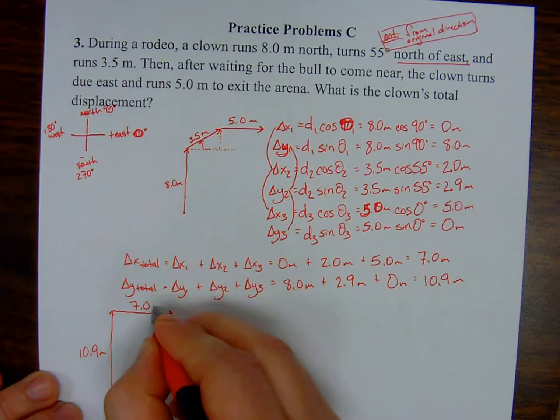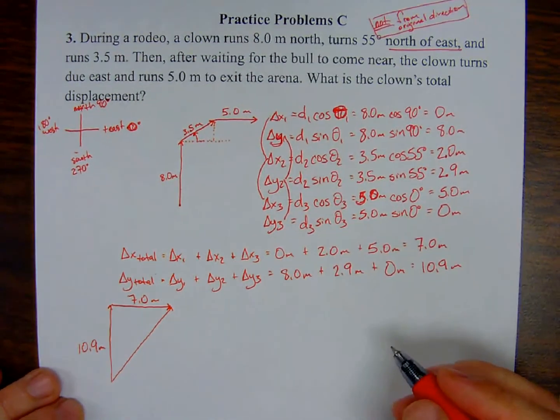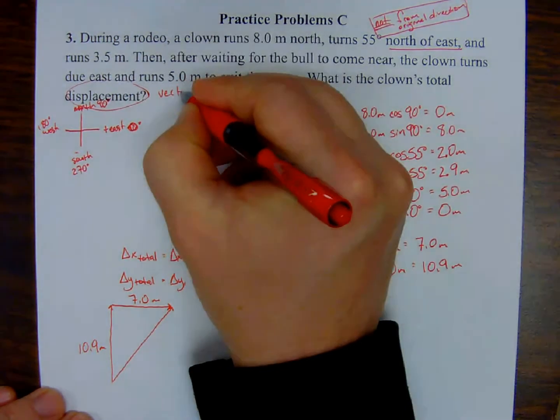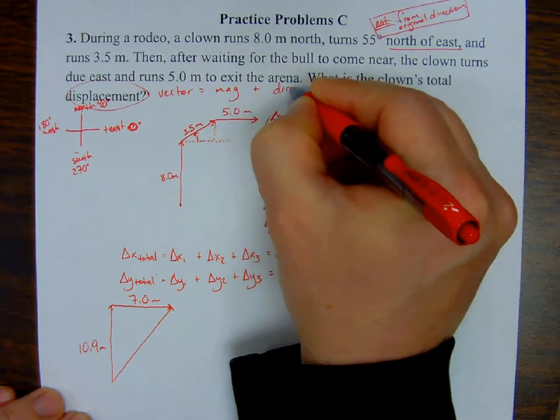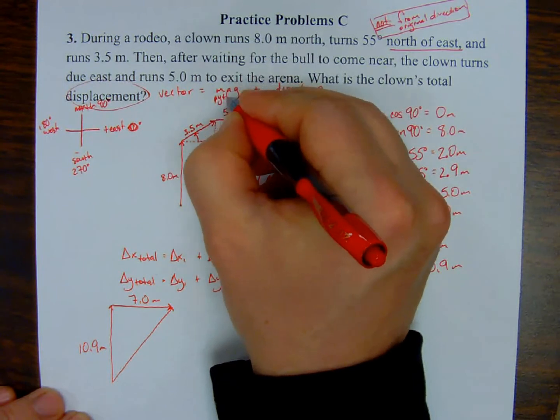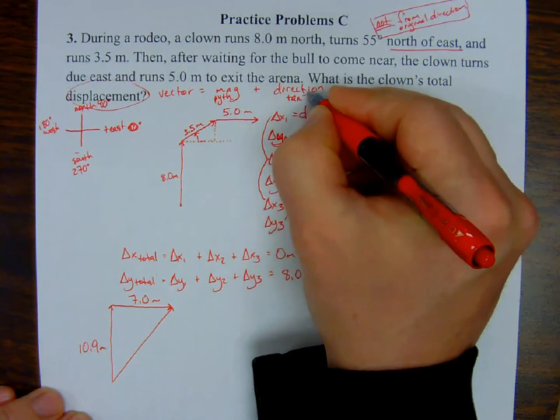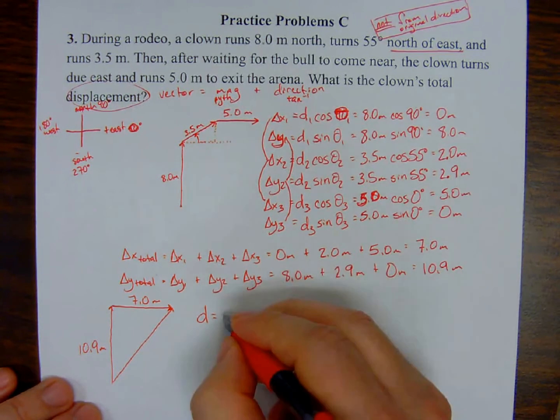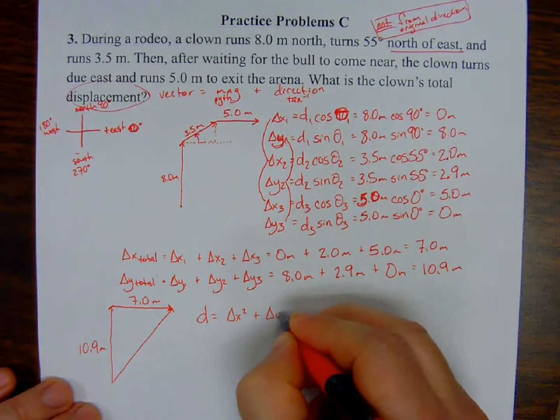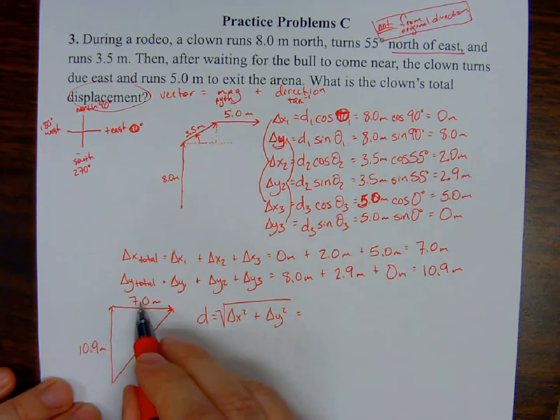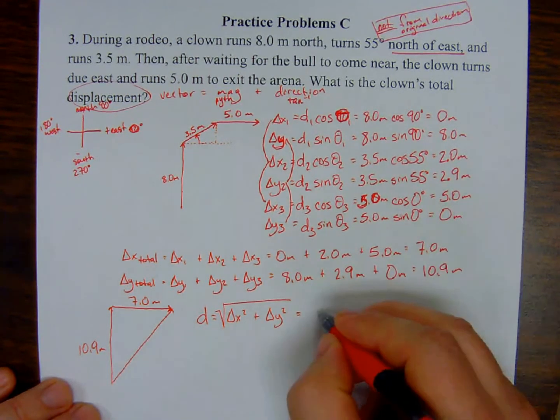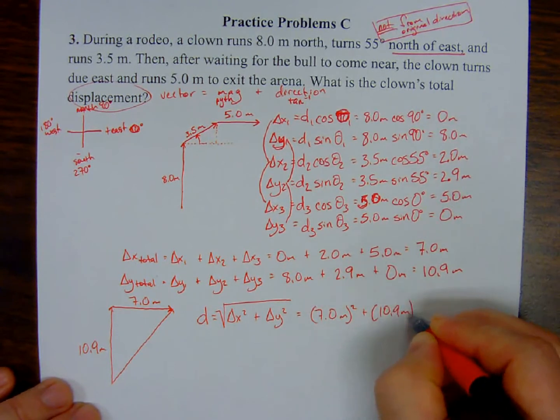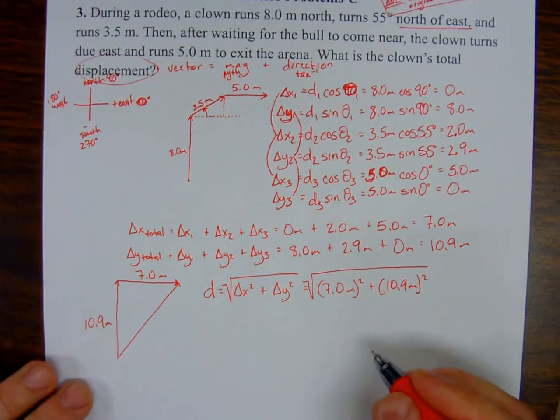Pythagorean theorem, solving for that hypotenuse already. I have my delta x squared plus my delta y squared, all square rooted. With the values that I just pulled from these totals, that ends up being 7.0 meters squared plus 10.9 meters squared, still under the radical. Let's actually square those numbers, we end up with 49 meters squared plus 119 meters squared, three significant figures, still under the radical. Let's add these like terms, 168 meters squared, still under the radical. Let's actually square root this, three significant figures. 13.0 meters. That's going to be the magnitude of the displacement. But we need that angle.